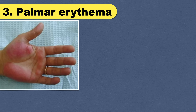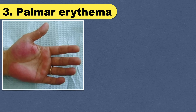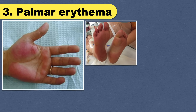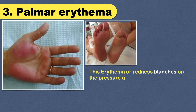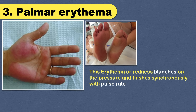Palmar erythema, also called liver palms, is a condition where your palms, dorsum of hands, fingertips, and nail beds become red. Similar changes can also be seen over the soles. This erythema or redness blanches on pressure and flushes synchronously with the pulse rate. You may also experience throbbing and tingling sensation.